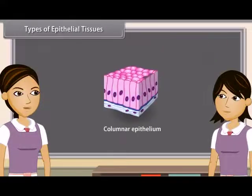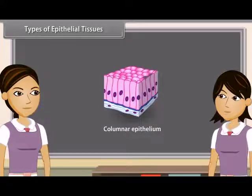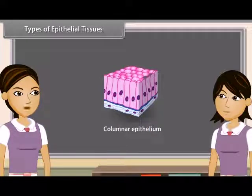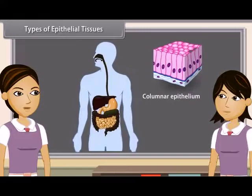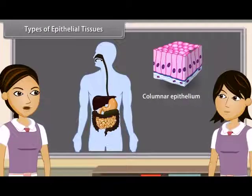Columnar epithelium consists of cells which are pillar-like in appearance because they are taller than broader. Their nuclei are at the base. It is found in the lining of stomach, small intestine, colon, gallbladder, and oviducts, forming the mucous membrane.